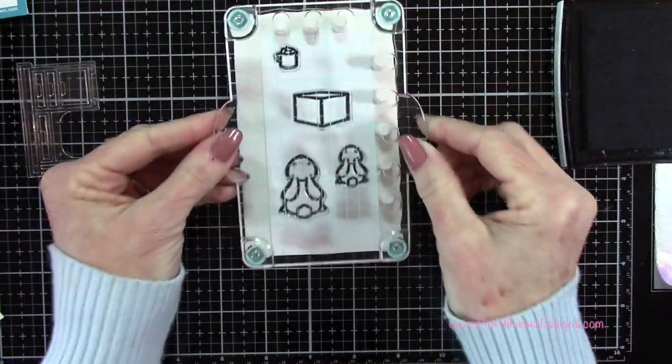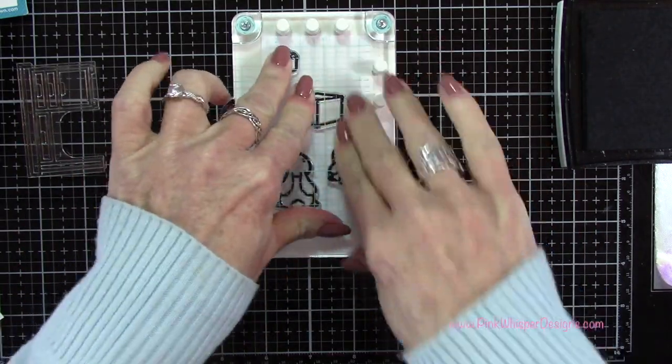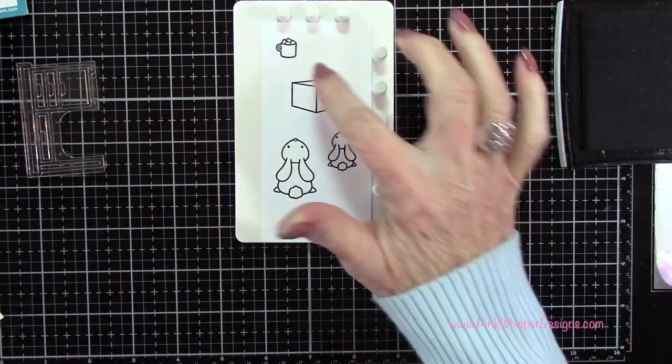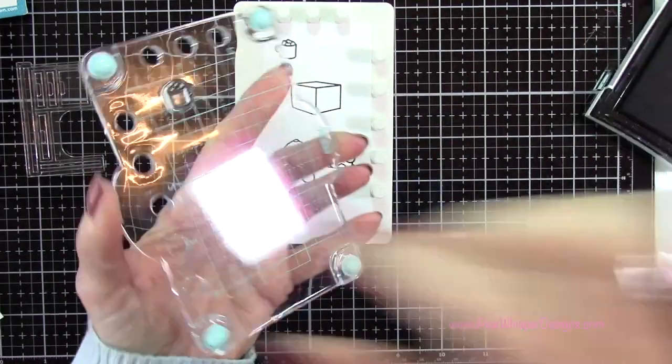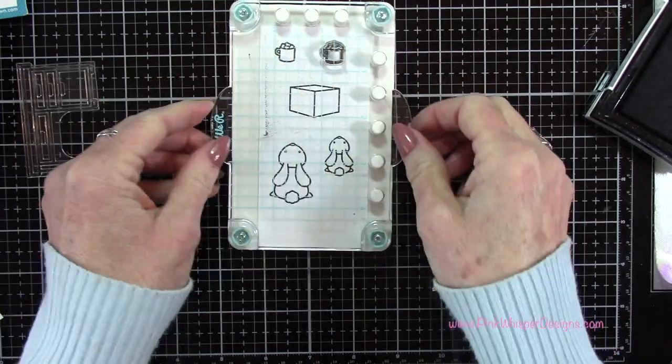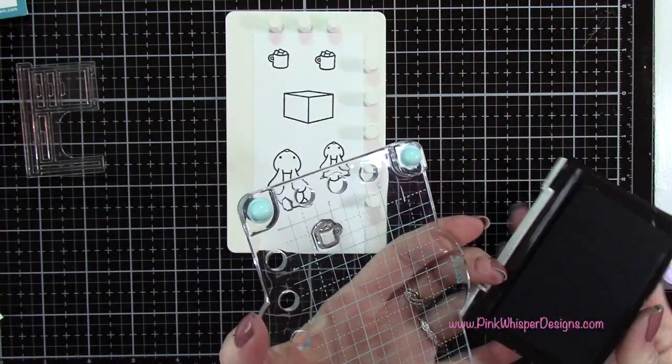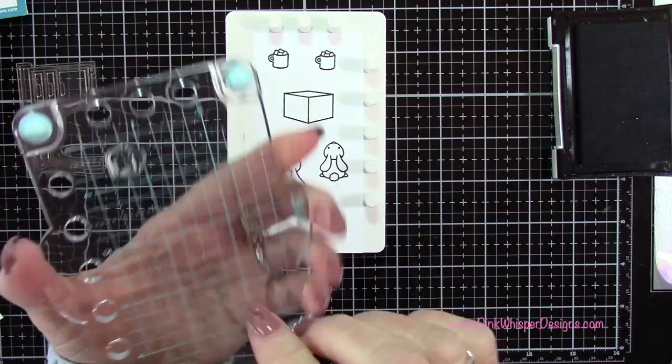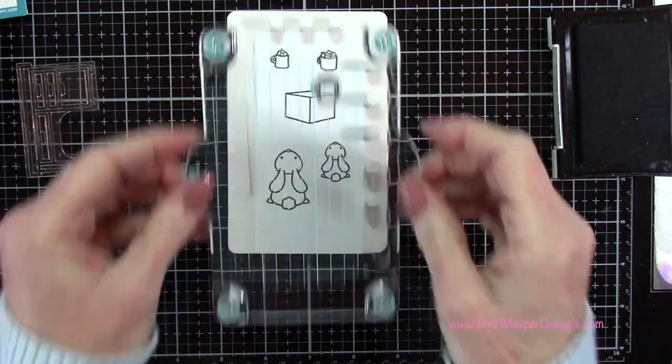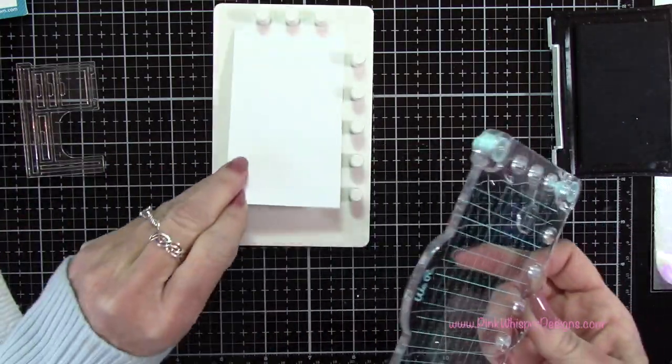I'm going to ink up my stamps using my VersaFine Onyx Black Ink. I'm just going to position it down and press it into place once I'm ready. Then I want to stamp a second one of the little mug of hot chocolate. Now it didn't completely stamp properly so I'm going to ink it up again. Since this is a perfect alignment, once I position that down it's going to stamp exactly where I want it to.